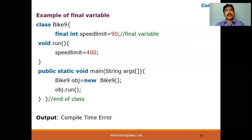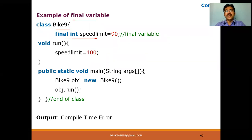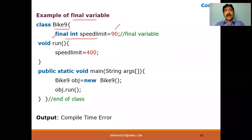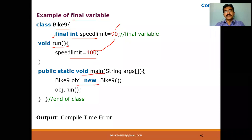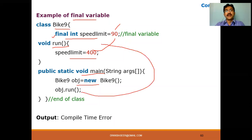Let me discuss with an example how we can apply the final keyword to a variable, a method, and a class. For the first example — a final variable — I'm creating a class called Bike9 and initializing a variable called speedLimit of integer type with the final keyword, setting it to 90. This is fixed as 90. Now in the run method, I'm trying to change speedLimit from 90 to 400, and then calling the run method via an object.